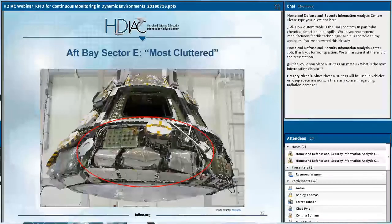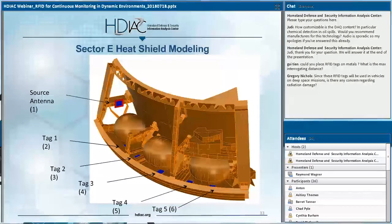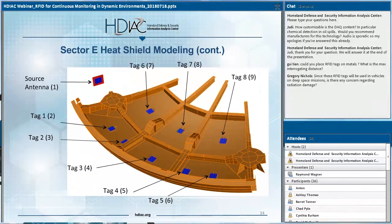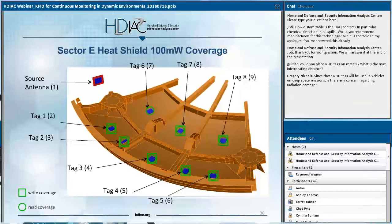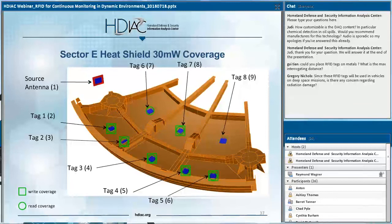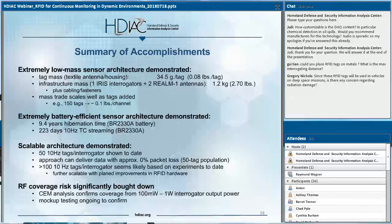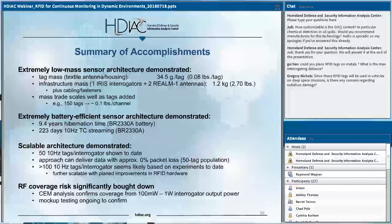For the most cluttered bay, which has a lot of tankage that we attempted to reconstruct in our mock-up, at one watt (plus 30 dBm) we cover everybody. At 100 milliwatts (plus 20 dBm) we do lose write coverage to one of the tags near the tankage. Things get worse as we back off further. This is all an approximation, but as a fairly sophisticated sanity check it gives us a lot of confidence.